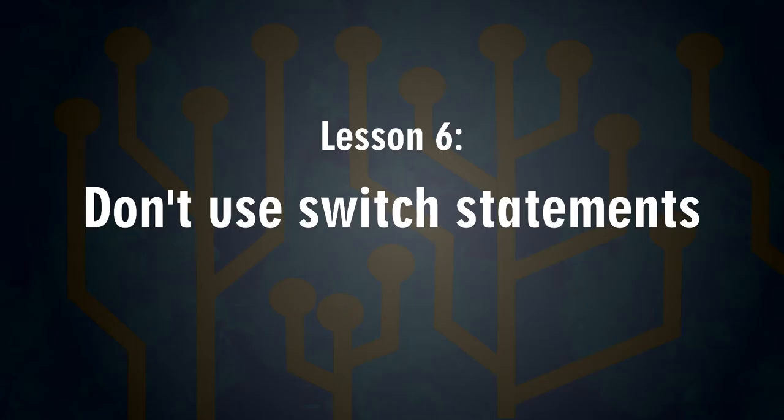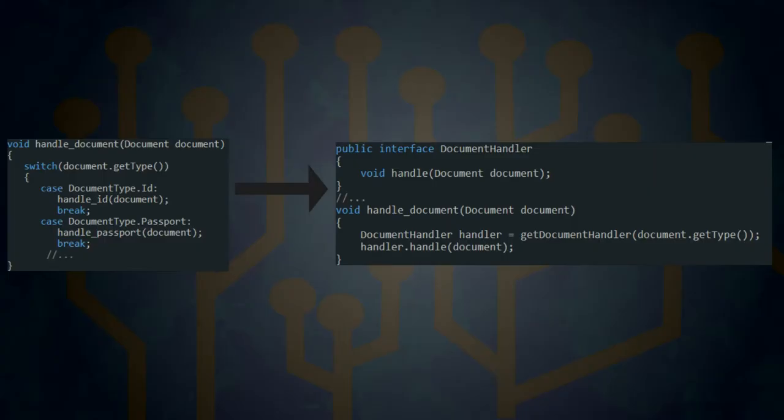Number six: Don't use switch statements. The authors argue that whenever there's a switch statement in code, it's a hint that polymorphism should be used. It may seem obscure at first, but if you think about it, it makes sense — a switch instruction implies that multiple handlers should be used, and multiple objects of the same type doing different things is exactly what polymorphism is. Clever.